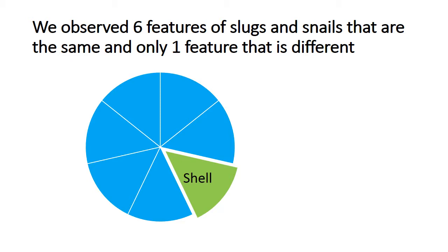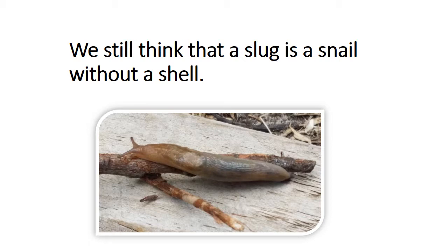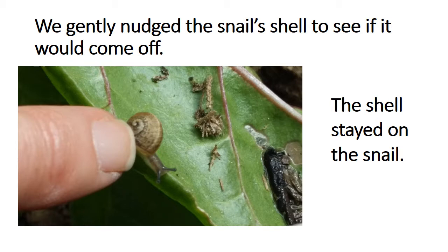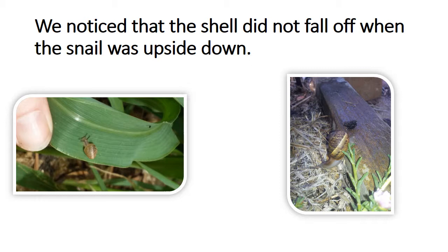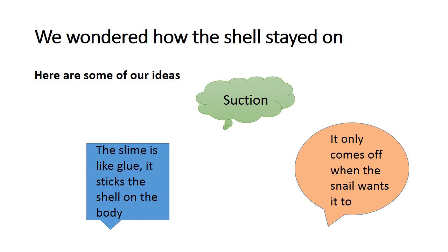At that point, some of the group still felt that a slug is a snail without a shell. We explored how the shell could actually stay on by giving it a gentle nudge to see if it would fall off. We also observed snails under leaves and crawling over wood, noticing the shell didn't fall off as gravity would suggest. Ideas about how the shell stays on included suction, or that the slime on the animal's body acts like glue, while others maintained the snail just takes it off when it wants to.